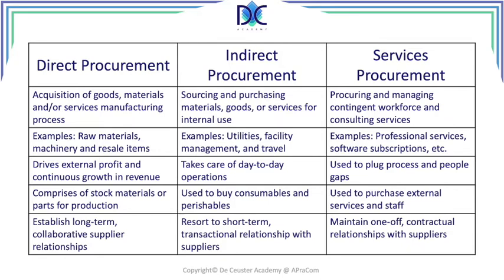In service procurement, we sometimes have a one-off or a contractual relationship with suppliers, though long-term relationships are also common. For example, at AT&T we had a lot of external consultants working on our projects for a longer time, and we had a very long-term good relationship with the people who supplied those external resources.